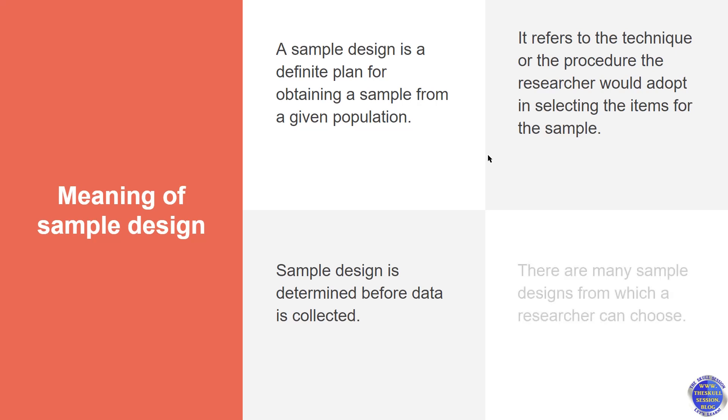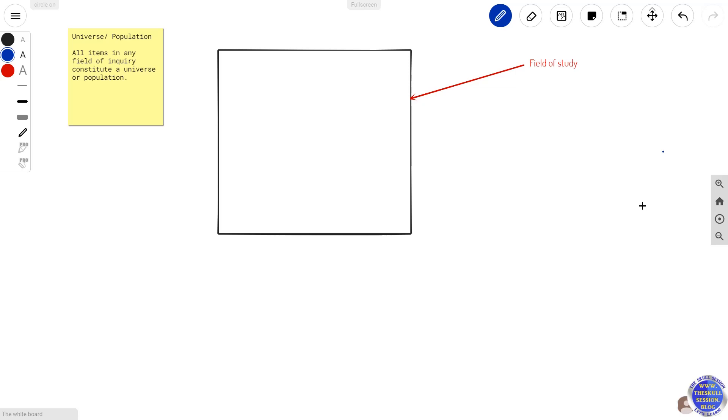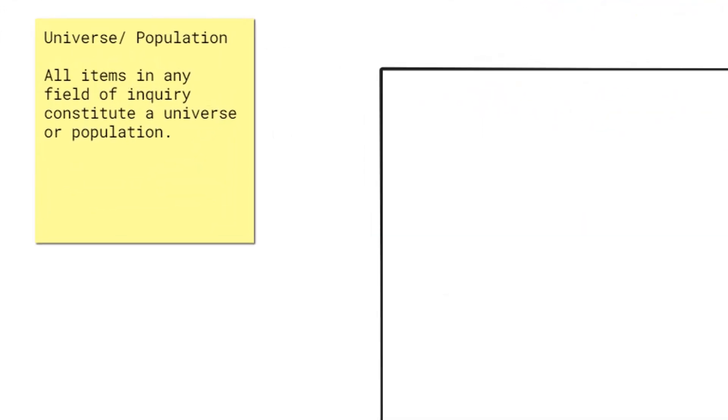There are certain terminologies such as population, finite, and infinite which need to be understood to understand the concept well. One of the important concepts regarding sample design is universe or population.